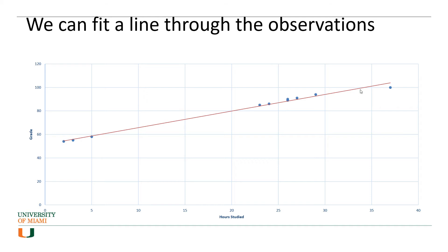You can fit a line to explain or predict the relationship between hours studied and grade. For instance, if somebody studied 20 hours, you would be able to say that person is very likely to get a grade of 80 — even if you don't have an actual observation for that. Similarly, if somebody studied 35 hours, the predicted grade would be close to 100, even though there's no data point there.